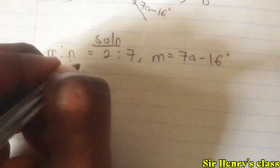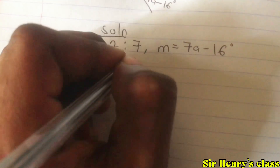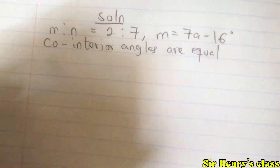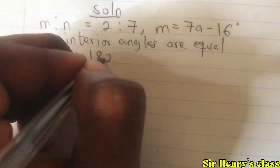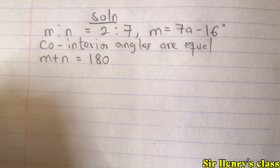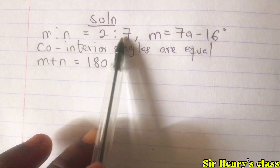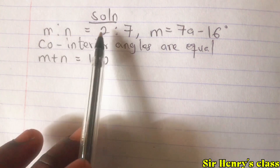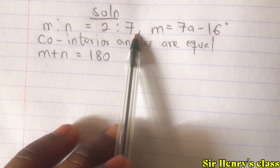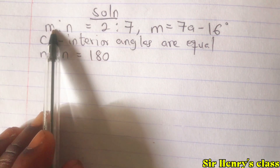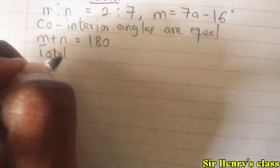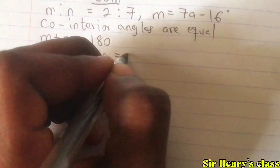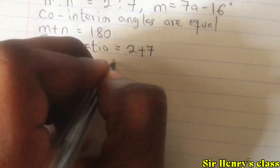Co-interior angles add up to 180 degrees, so m and n add up to 180. Therefore, m plus n equals 180. The ratios are given: m corresponds to 2 and n corresponds to 7. To find m and n, we look at the total ratio, which is 2 plus 7 equals 9.